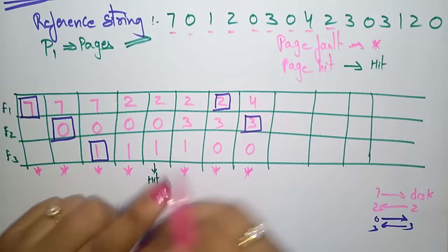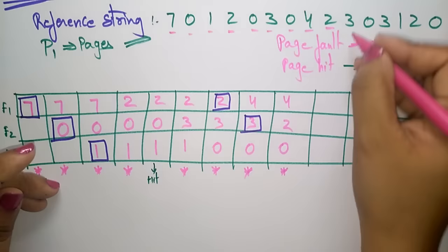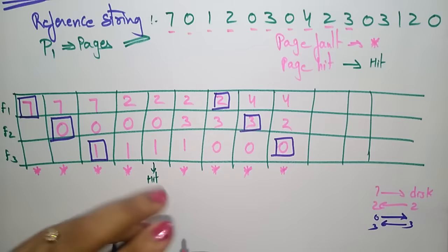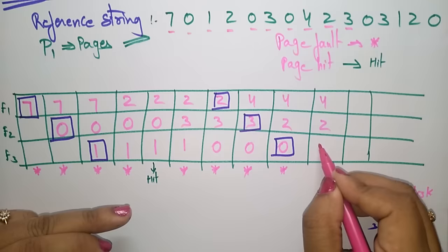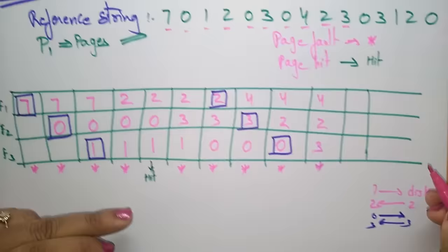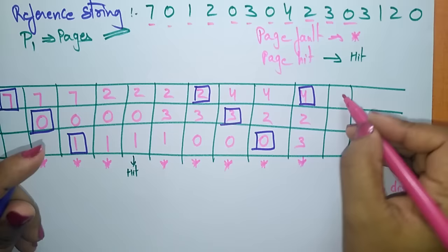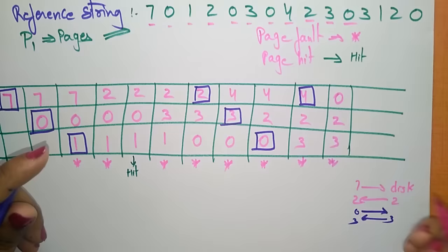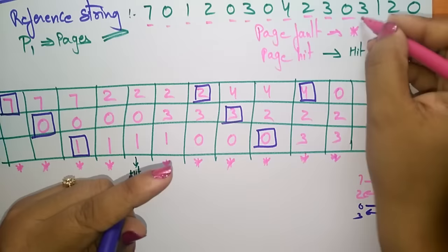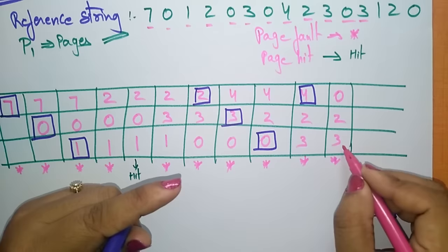Next, page 2 is demanded — page fault. Then page 3 is demanded. Using FIFO, 4 is first in, so 4 is replaced. Frames become: 0, 2, 3. Page fault. Next, page 0 is demanded but 0 is not present — page fault; frames become: 0, 2, 3. Then page 3 is demanded and 3 is already present in main memory — this is a hit.